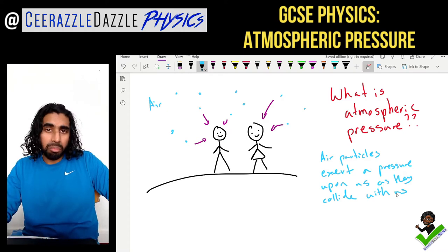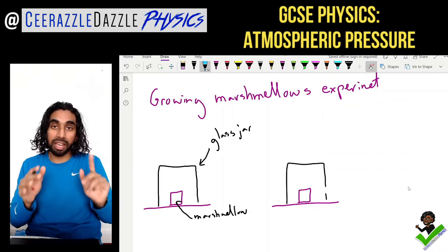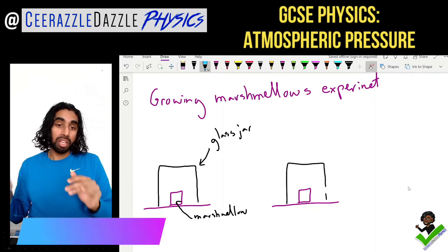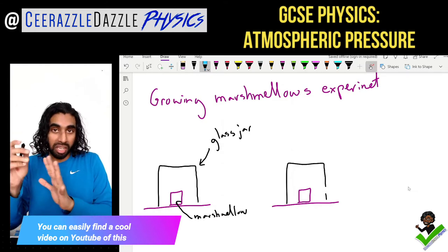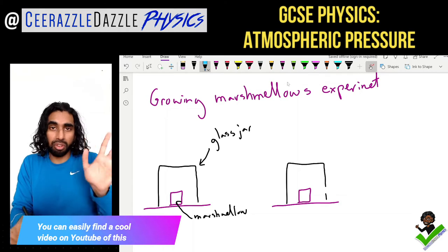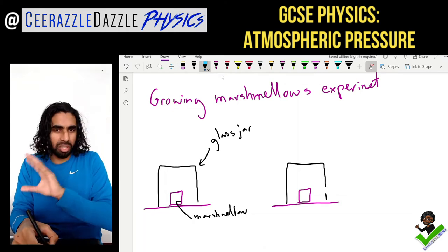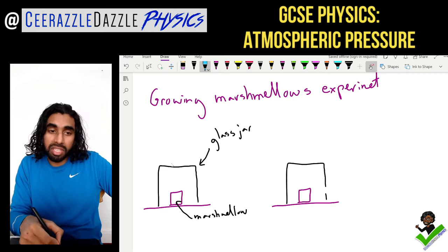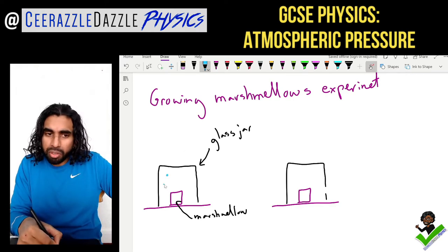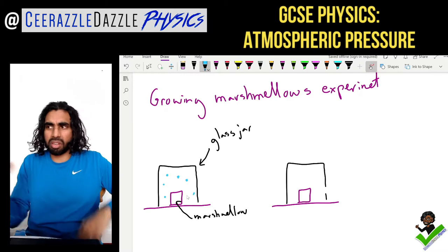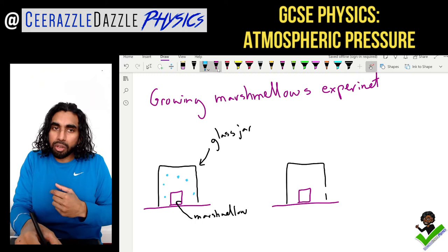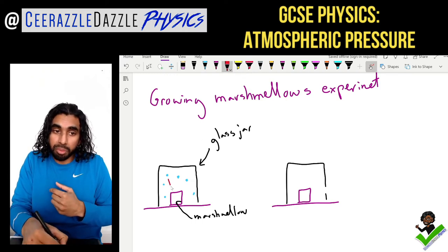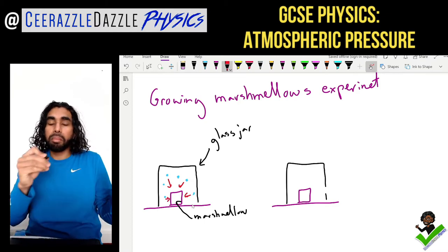Let's look into it in a bit more detail with a classic experiment called the growing marshmallows experiment. On the left hand side we have a glass jar with a marshmallow placed inside it — you can find this on YouTube. There are air particles inside the glass jar, and those air particles are exerting a force on the marshmallow, constantly bombarding it and keeping it in position.